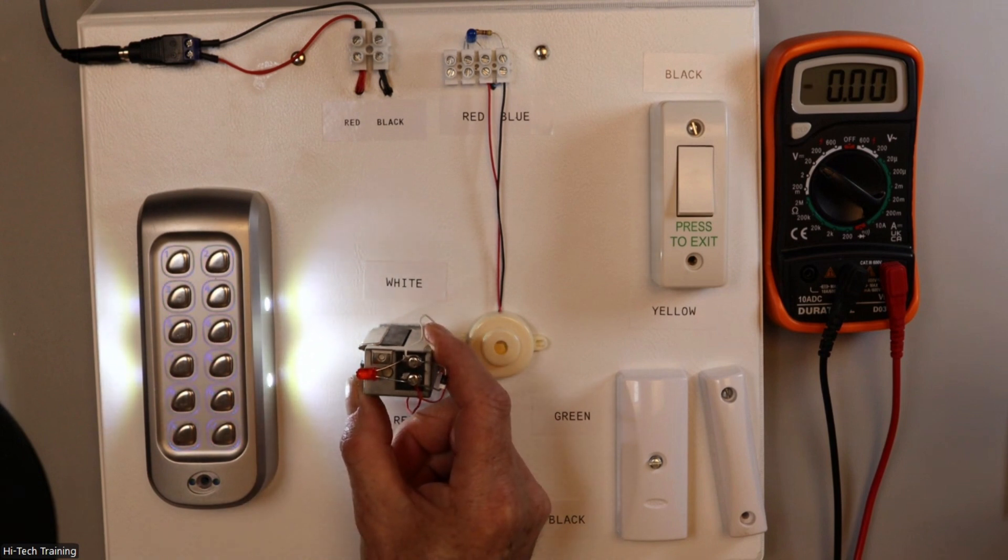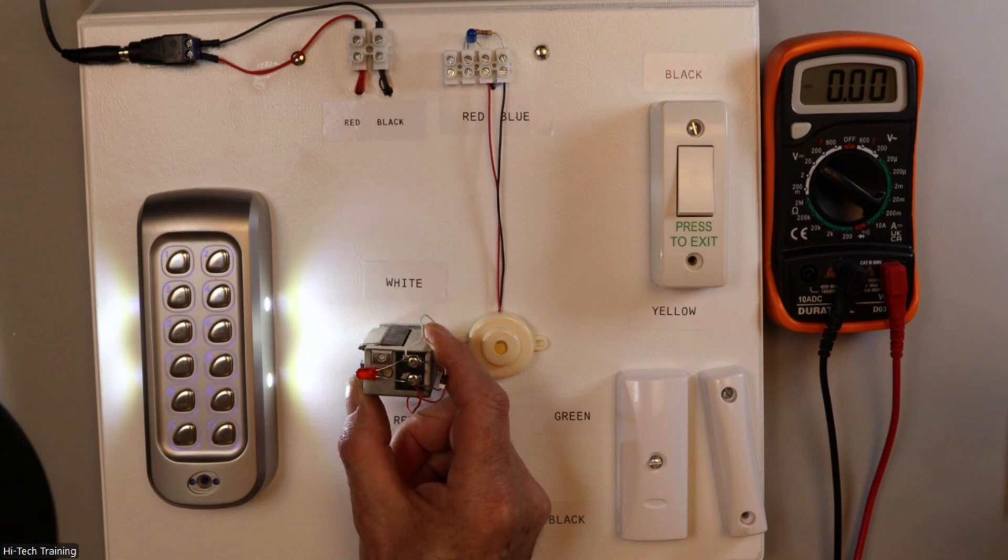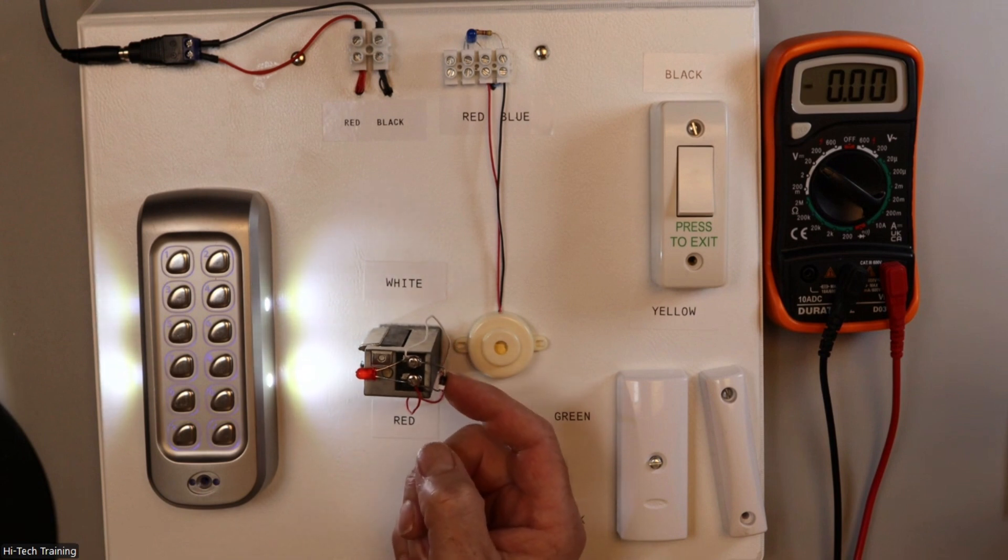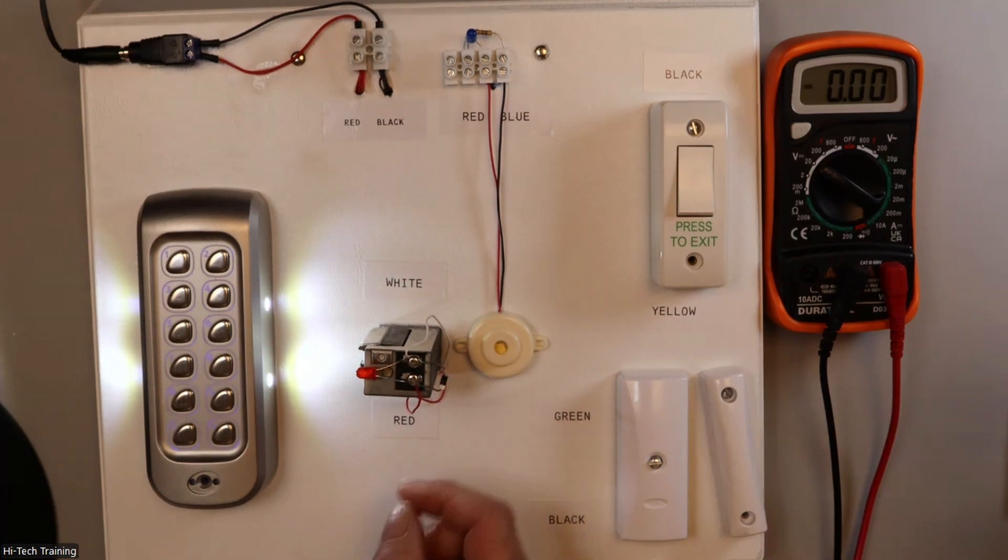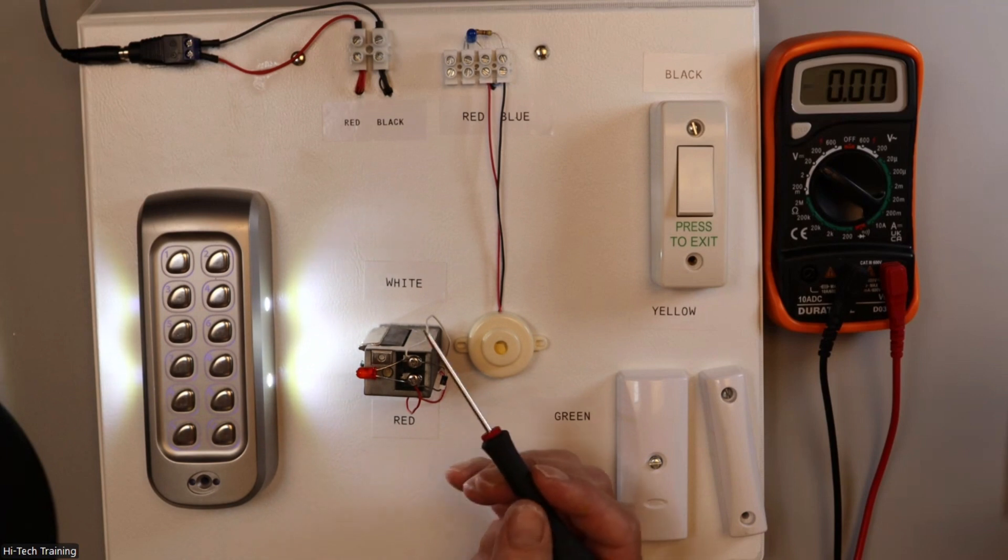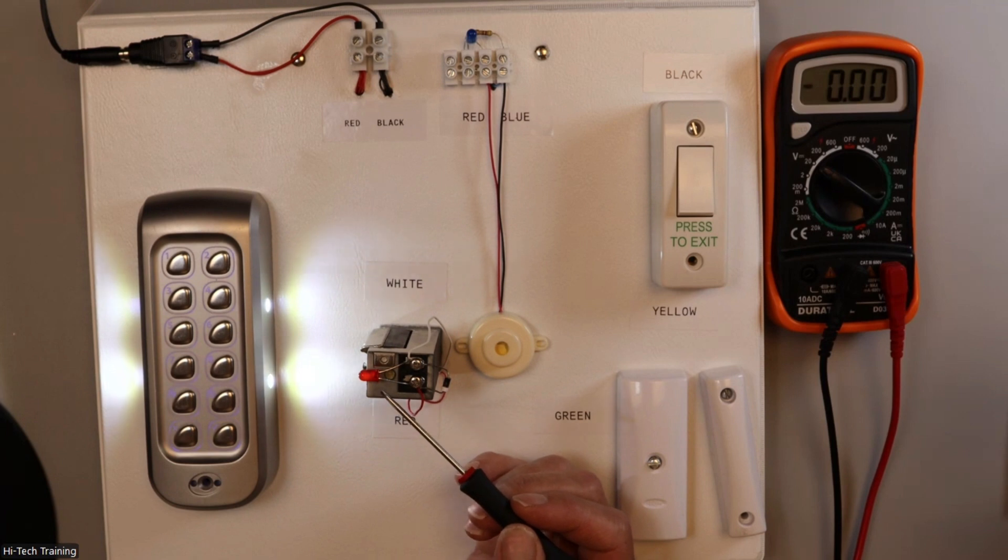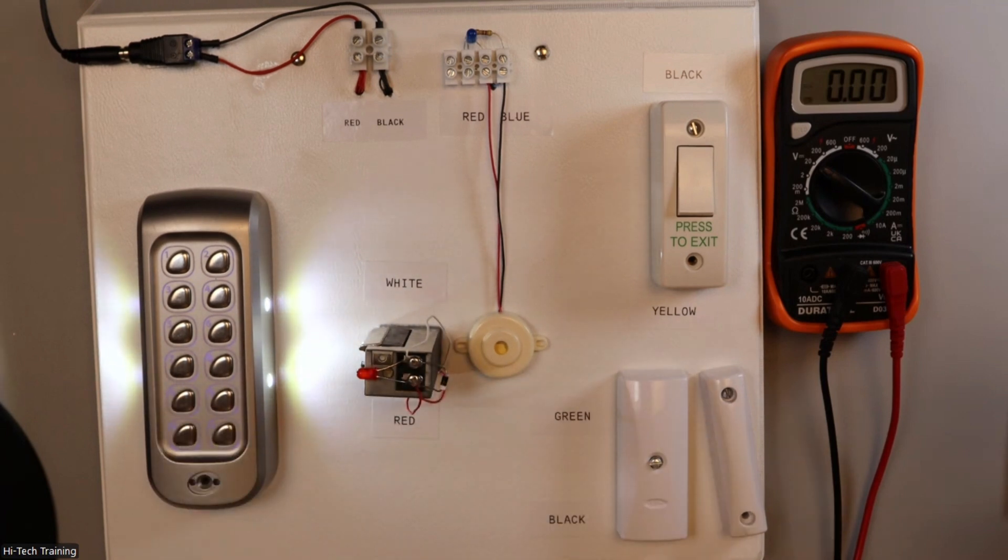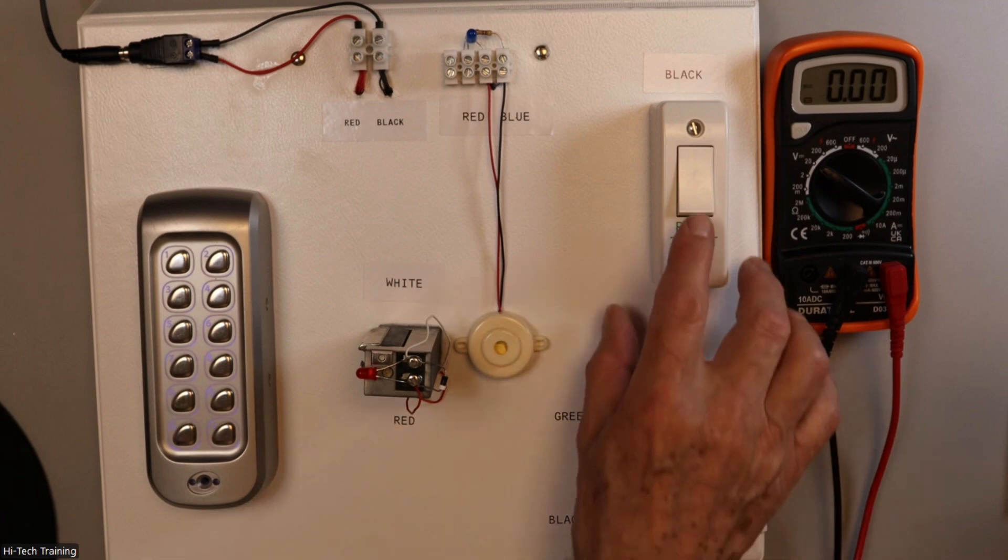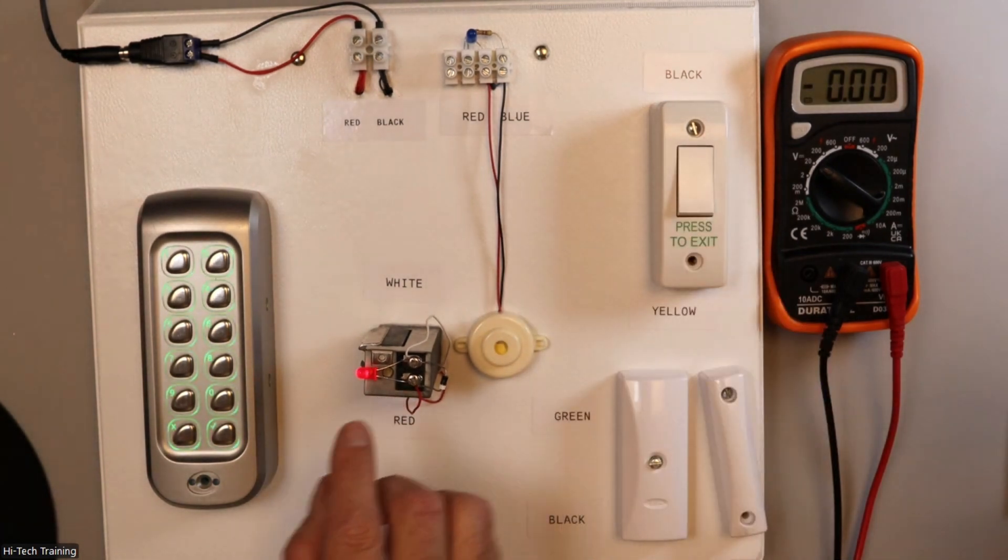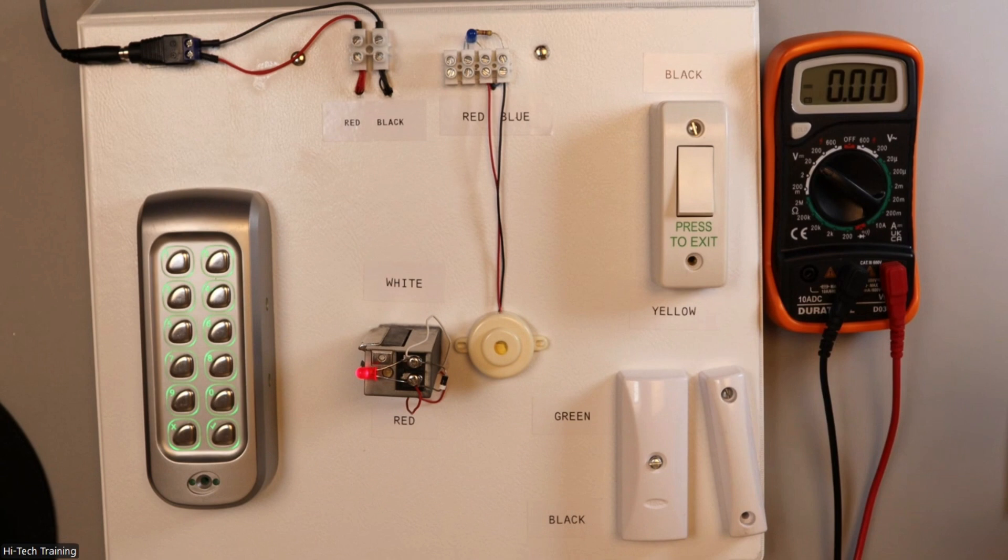Locks like this produce back EMFs, which are high negative voltages which can damage a lot of the equipment here. But this diode put in the correct way, with anode and cathode, effectively suppresses the high negative voltages from this lock to protect all of the equipment here. So it's very important that this is put in and put in the right way around. So I'll just show you the exit button. There's the exit button there, works. It works quite well for us.